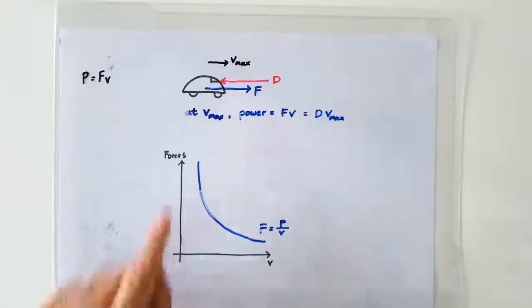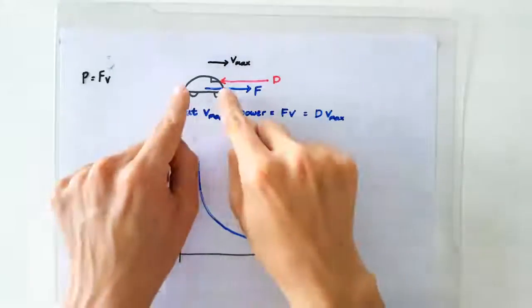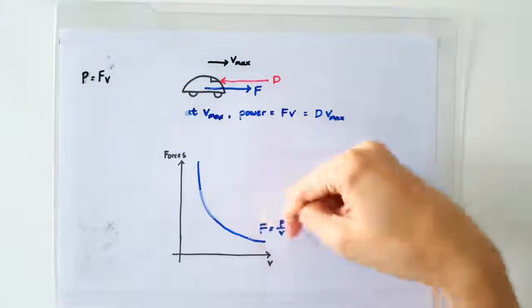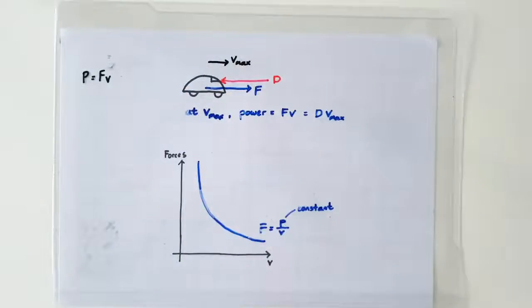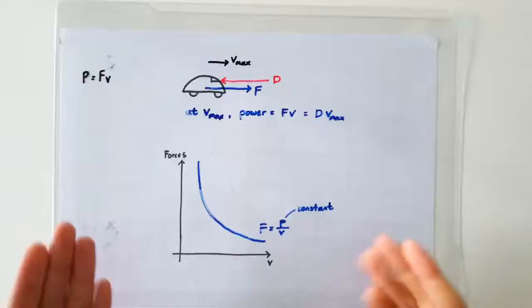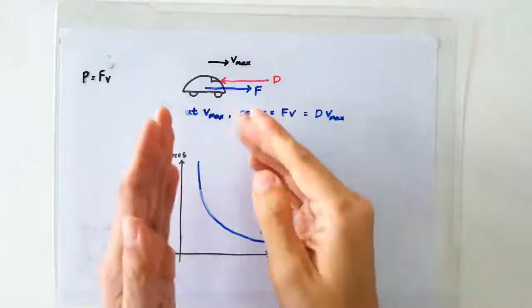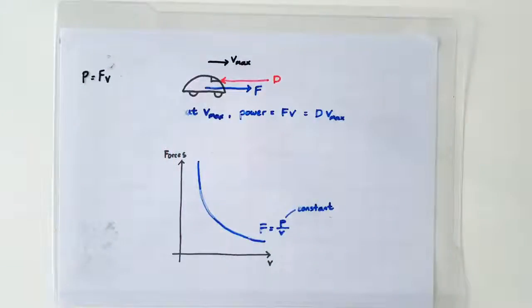If we sketch the FV graph for the car engine, it will be a 1 over X graph. This is because we are assuming the power delivered by the car engine to be a constant. In practice, this corresponds to the maximum power that the car engine can deliver.